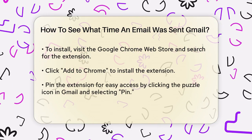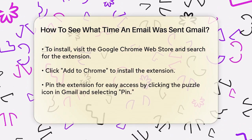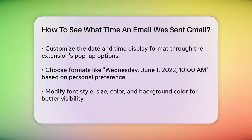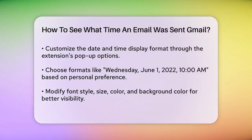Now, you can customize how the date and time are displayed. Click on the Display Email Time icon in your browser, and you'll see a pop-up with various options. Here, you can choose the exact date and time format you prefer. For example, you can select a format like Wednesday, June 1, 2022, 10 a.m., or any other combination that suits your needs.